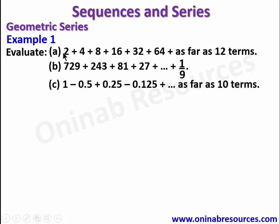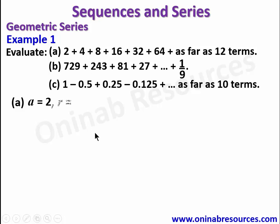Example 1: Evaluate (a) 2 + 4 + 8 + 16 + 32 + 64, for as far as 12 terms; (b) 729 + 243 + 81 + 27 up till 1 over 9; and (c) 1 - 0.5 + 0.25 - 0.125 + ... for 10 terms. Starting from A, the first term is 2 and the common ratio is 4 divided by 2, which gives 2, or 8 divided by 4, which also gives 2. Our n is 12 since we need to find the sum of the first 12 terms. Since the common ratio is greater than 1, we use Sn = a(r^n - 1) / (r - 1).